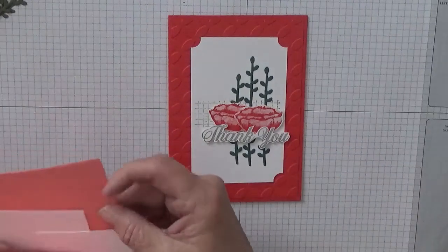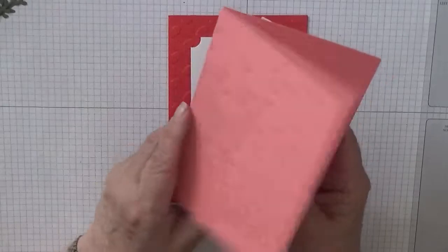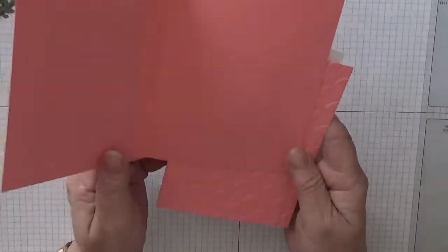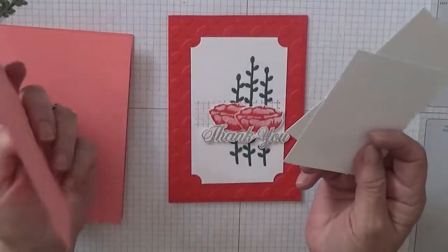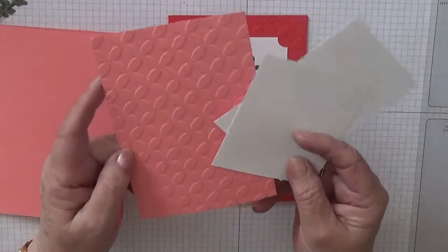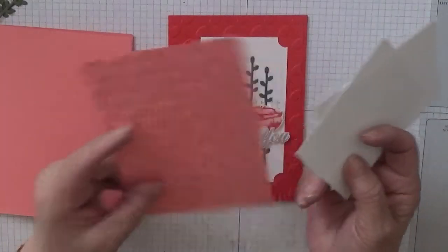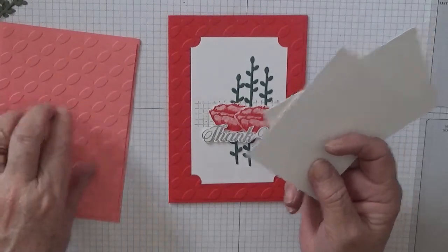For that you'll need a card base. I'm using Flirty Flamingo of eight and a quarter by five and seven eighths, scored at four and one eighths and folded in half and burnished. A piece of flirty flamingo at five and five eighths by three and seven eighths, embossed.